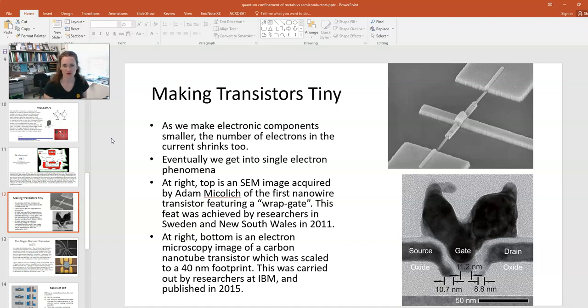And then at bottom right you have an electron microscopy image with a carbon nanotube transistor that was scaled to a 40 nanometer footprint. This was carried out in IBM and published in 2015. So you can see the dimensions on these things are truly approaching mind-bogglingly small. You've got dimensions here on the order of 10 or 11 nanometers, so that's teeny.